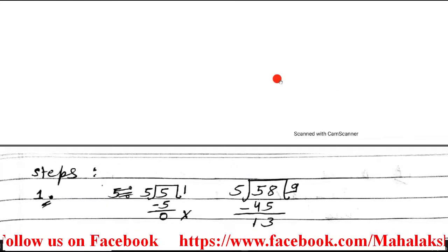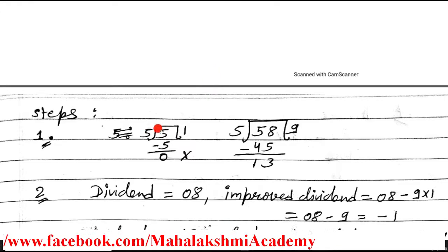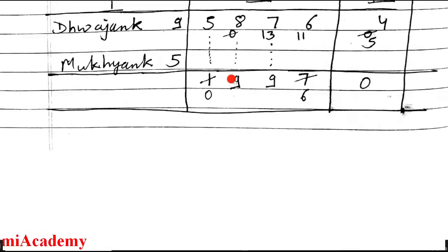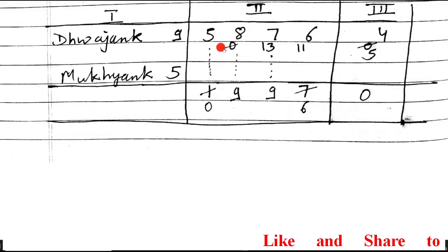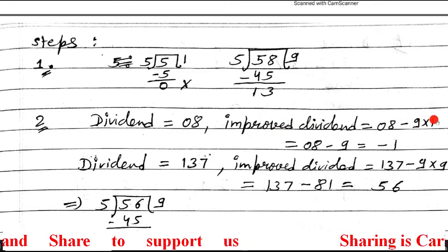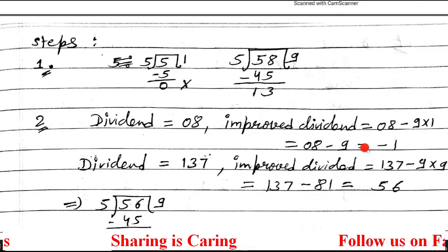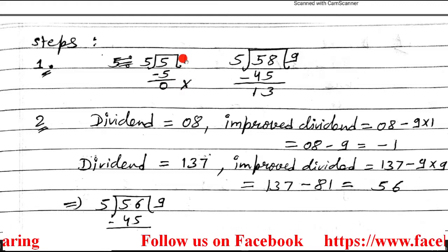Divide 5 by 5: you get quotient 1 and remainder 0. Write quotient 1 and remainder 0 in the table. For the next step, the dividend is 08. Find the improved dividend: 08 minus 9×1 = minus 1. Since the improved dividend is negative, you have to reduce this — put a cross here, since we took 1 here that is why it happened.